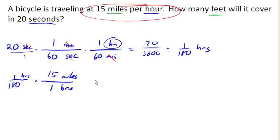Hours are going to get reduced. We're going to be left with miles. We're going to be left with 15 over 180, which is 1/12th of a mile. So in those 20 seconds, the bicycle travels 1/12th of a mile.